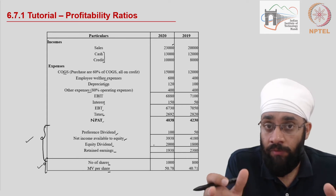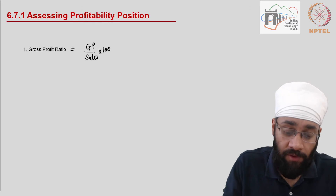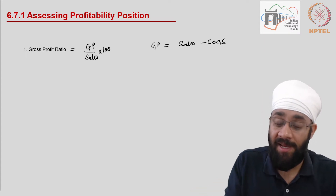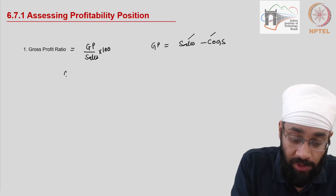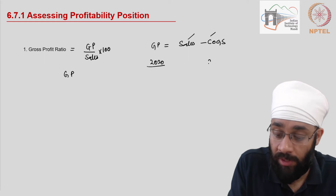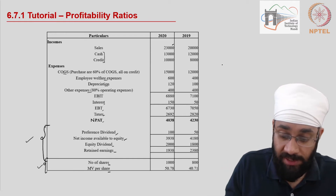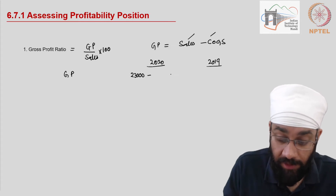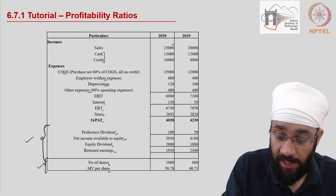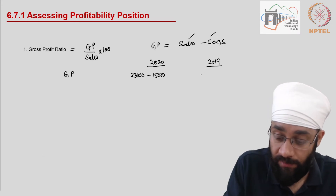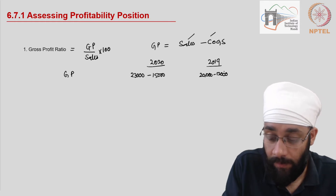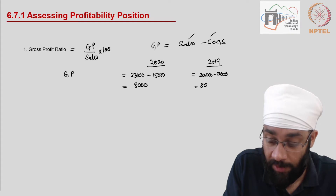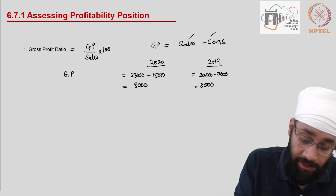We know how to calculate gross profit: Gross Profit = Sales minus Cost of Goods Sold. Both numbers are given. For 2020: Sales = 23,000 and Cost of Goods Sold = 15,000. For 2019: Sales = 20,000 and Cost of Goods Sold = 12,000. This gives Gross Profit = 8,000 for both years.